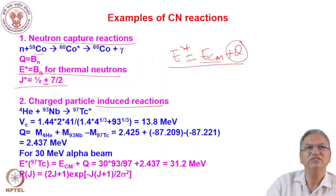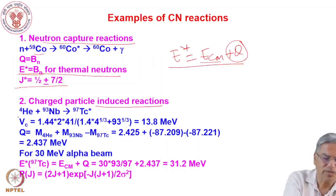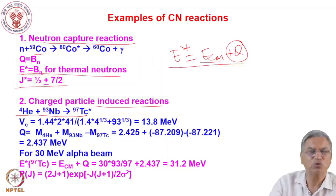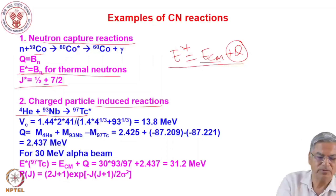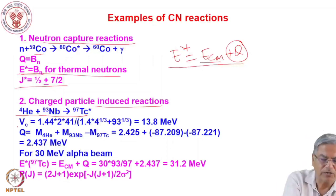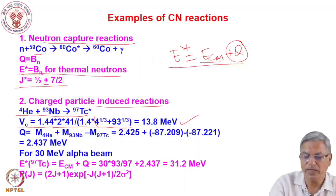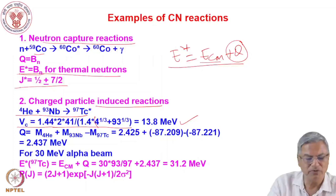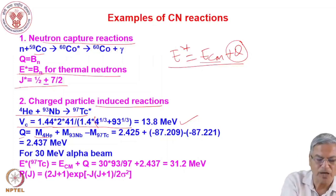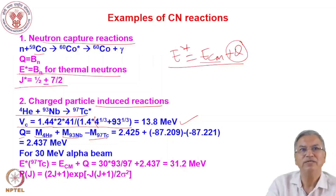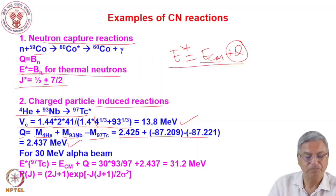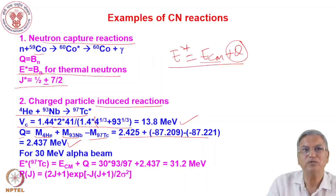For charged particle induced reactions, the charged particle must cross the Coulomb barrier of the target nucleus. The Coulomb barrier is calculated as 1/40 × (Z1 Z2) / (R0 (A1^(1/3) + A2^(1/3))). For alpha on niobium-93, the Coulomb barrier is 13.8 MeV. The Q value for this reaction — mass of alpha plus mass of niobium-93 minus mass of technetium-97 — gives 2.437 MeV. So the center-of-mass energy of the alpha must be greater than or equal to 13.8 MeV.